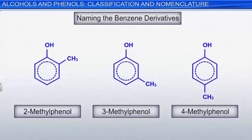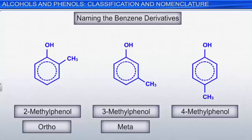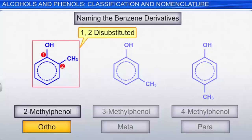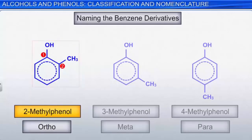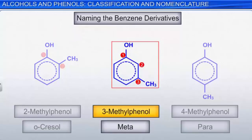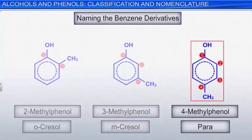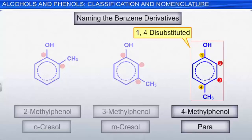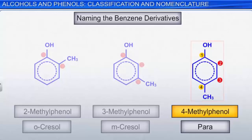We can also introduce the prefixes ortho, meta, and para to name benzene derivatives. Ortho refers to 1,2-disubstituted benzenes; similarly, 2-methylphenol can also be named ortho-cresol. Meta is used to refer to 1,3-disubstituted benzenes, so 3-methylphenol is also called meta-cresol. Finally, the prefix para is used for 1,4-disubstituted benzenes; therefore, 4-methylphenol is also called para-cresol.